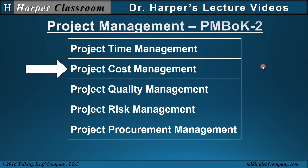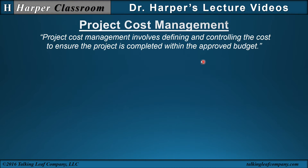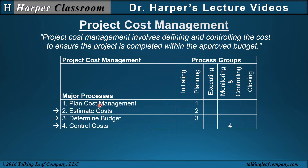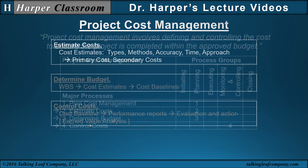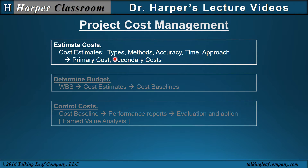Now let's look at project cost management. Project cost management involves defining and controlling the cost to ensure the project is completed within the approved budget. There are four major processes; we'll look at the last three. In estimating costs, we look at the types, methods, accuracy, time, and approach of determining costs, which will generate primary costs and secondary costs like contingency funds.